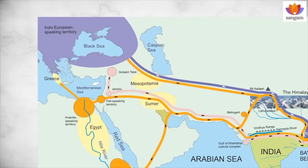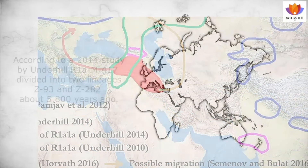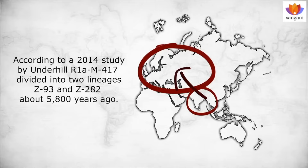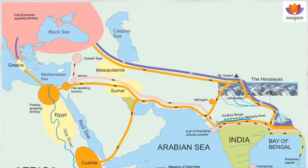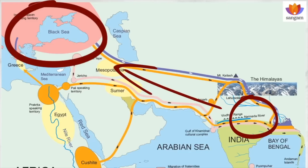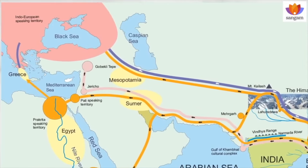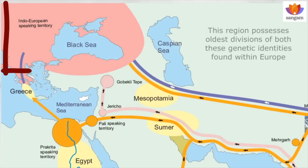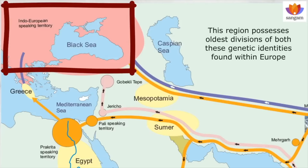The other branch from Mount Kailash reached Eastern Europe, entering the continent through Anatolia and the European steppe. Thus we find another old division of R1-alpha detected by the Underhill team in that region. According to a 2014 study by Underhill, R1-alpha M417 divided into two lineages — Z93 and Z282 — about 5,800 years ago. Z93 is more common in the Indian subcontinent while Z282 is in Europe. This suggests that these two lineages dissociated 5,800 years ago when R1-alpha spread from India to Eastern Europe across the Himalayas, and these two lineages flourished in their respective territories.